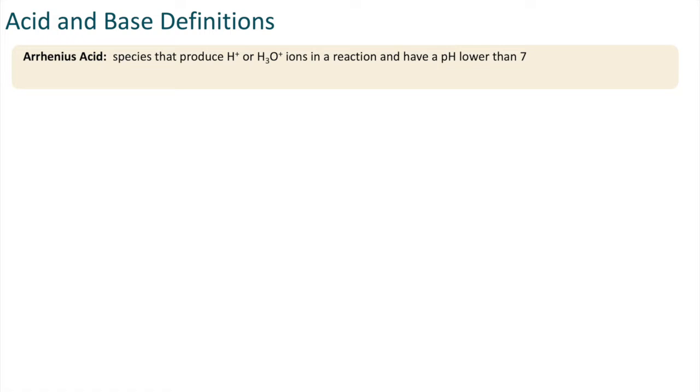An Arrhenius acid is a species that produces hydrogen or hydronium ions in a reaction and has a pH lower than 7. An Arrhenius base is a species that produces hydroxide ions in a reaction and has a pH greater than 7.